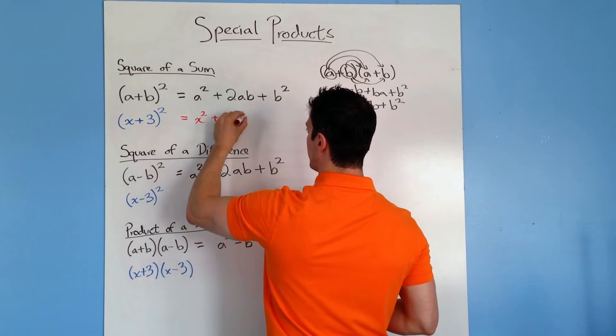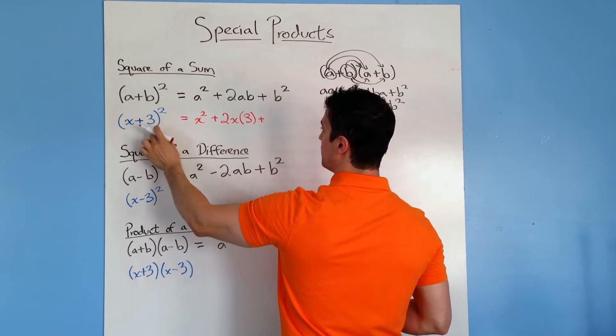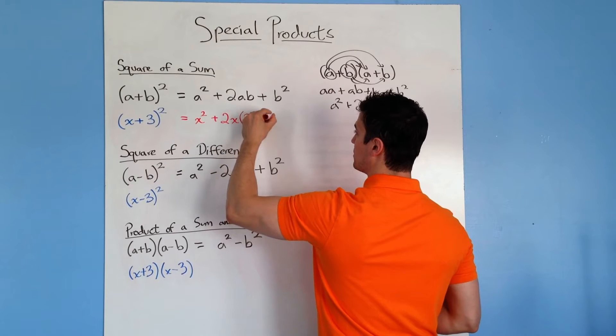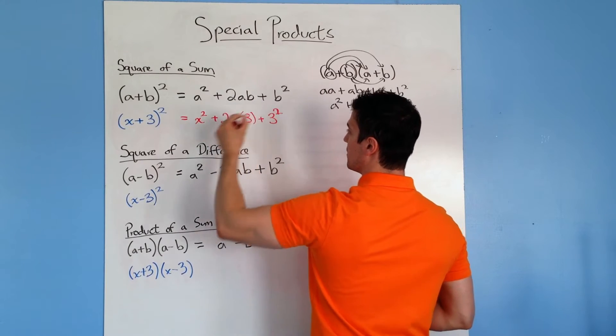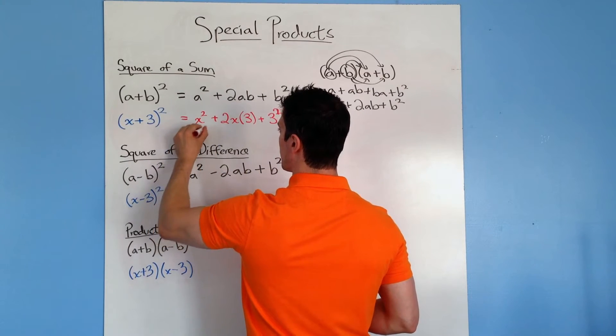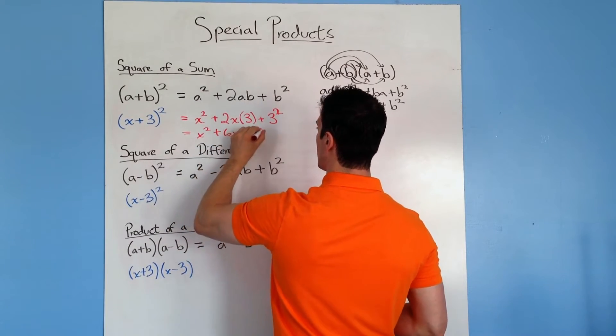times the b term, which is 3, plus that b term squared. So it would be 3 squared. And then you end up with x squared plus 6x plus 9.